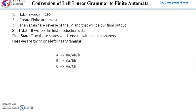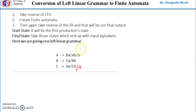In this video lecture I will explain conversion of left linear grammar to finite automata. We have seen conversion of right linear grammar to finite automata, which was straightforward. Here, whatever left linear grammar is given to us, we first take the reverse of the CFG — because all regular grammar will be CFG — and then create a finite automata for that.